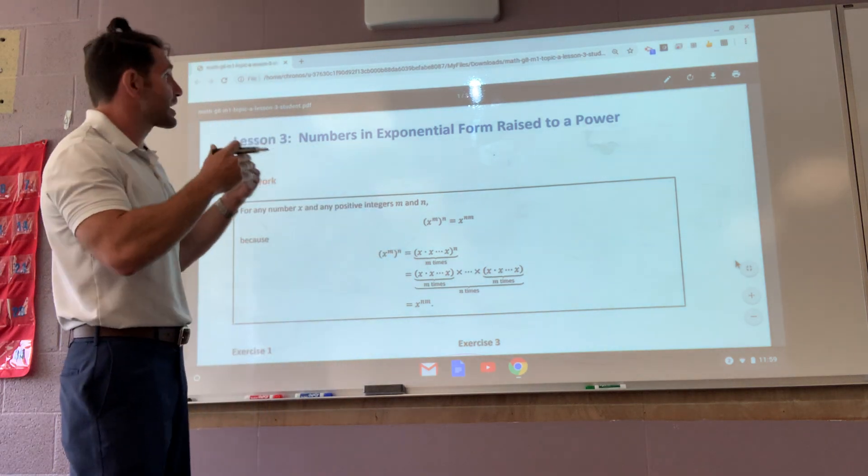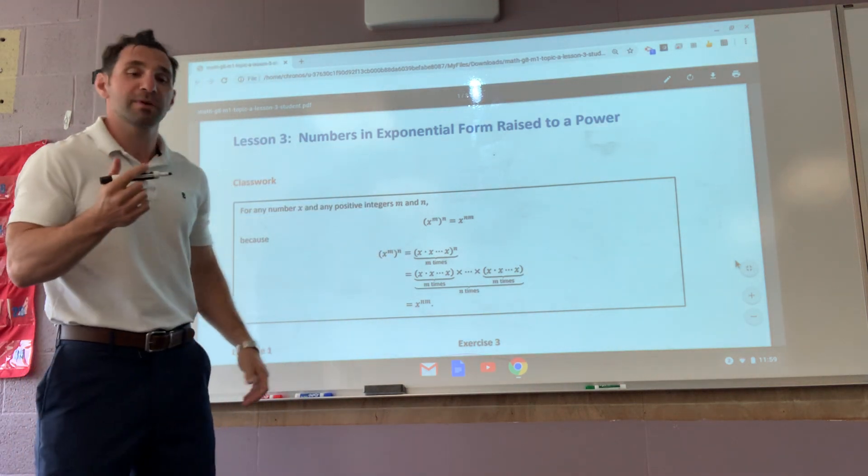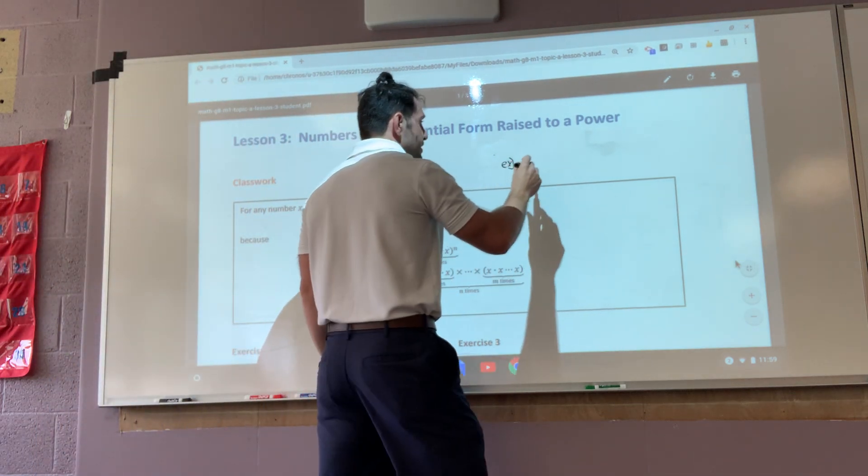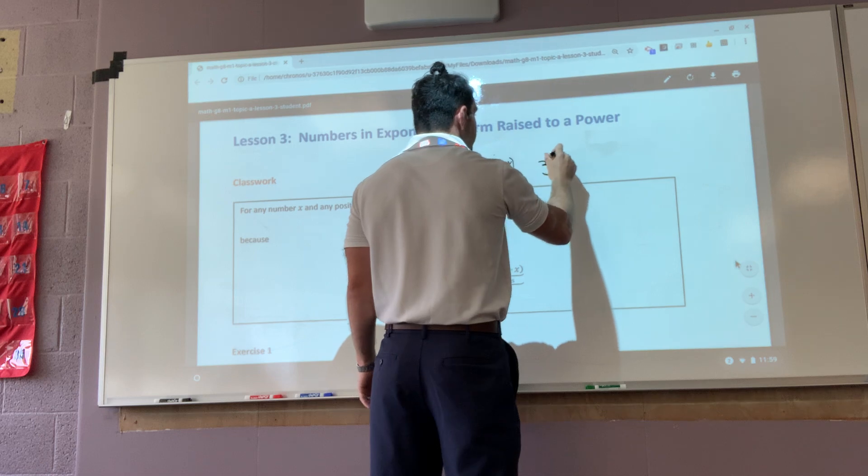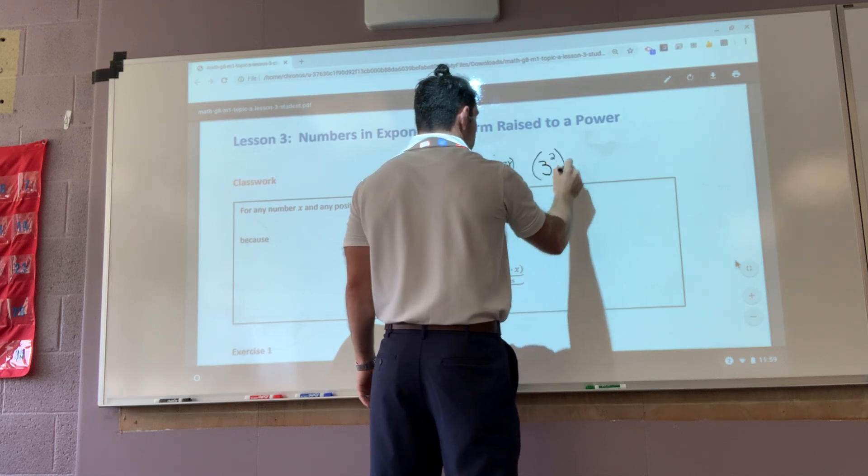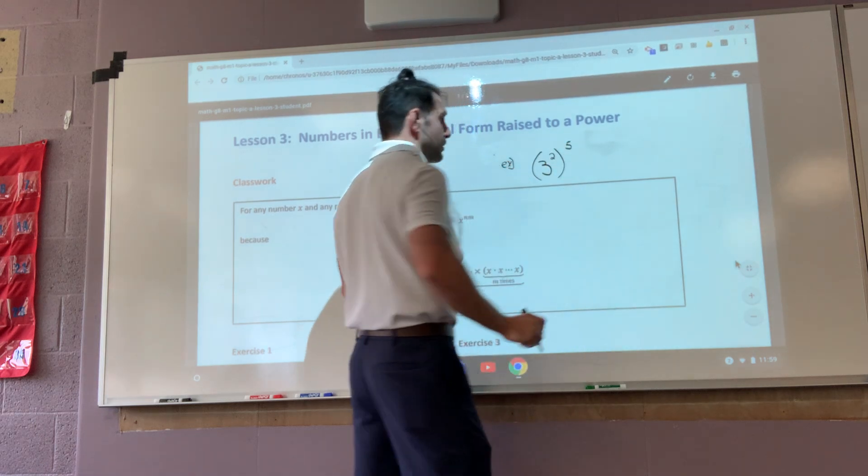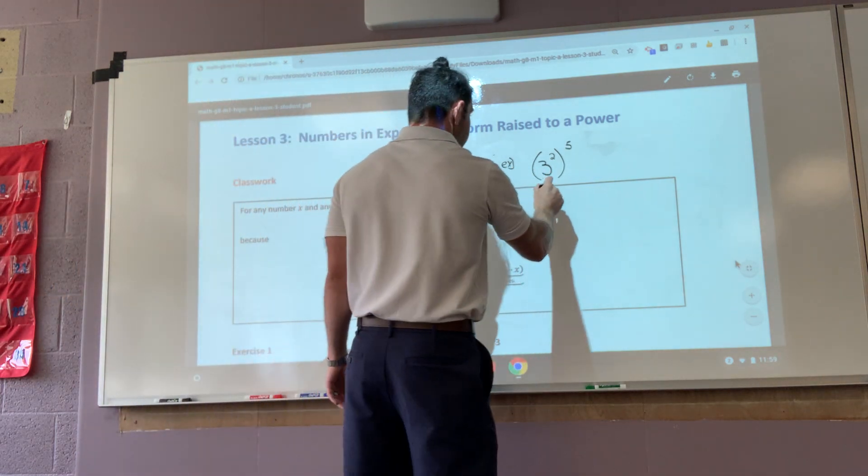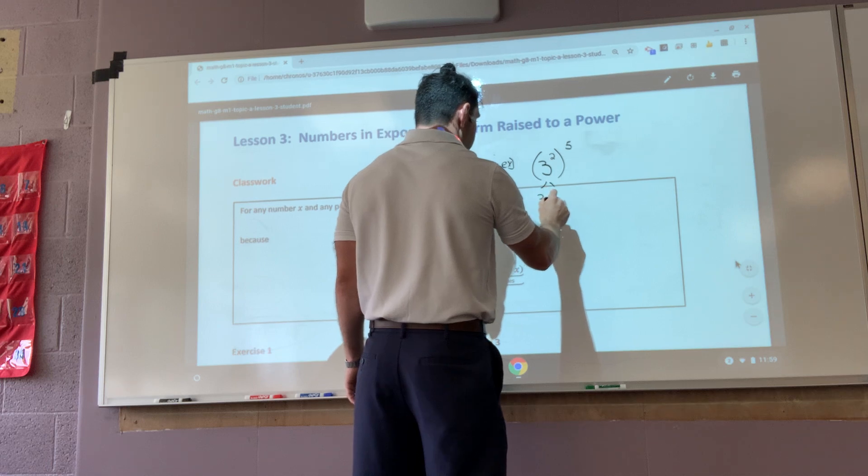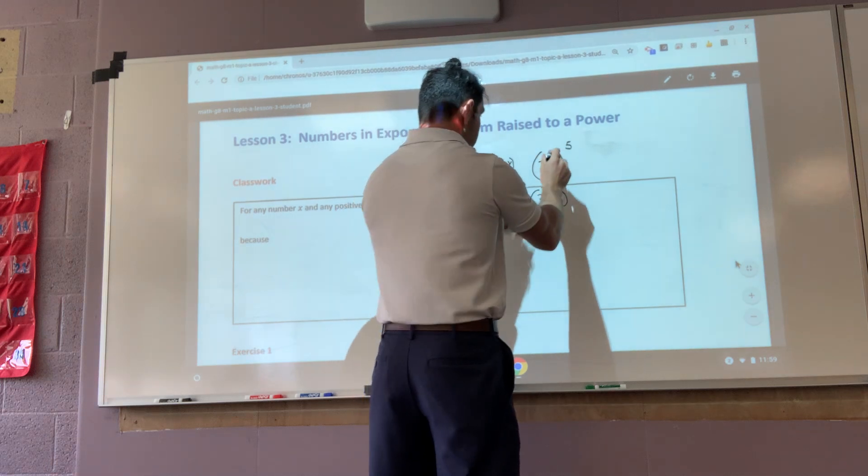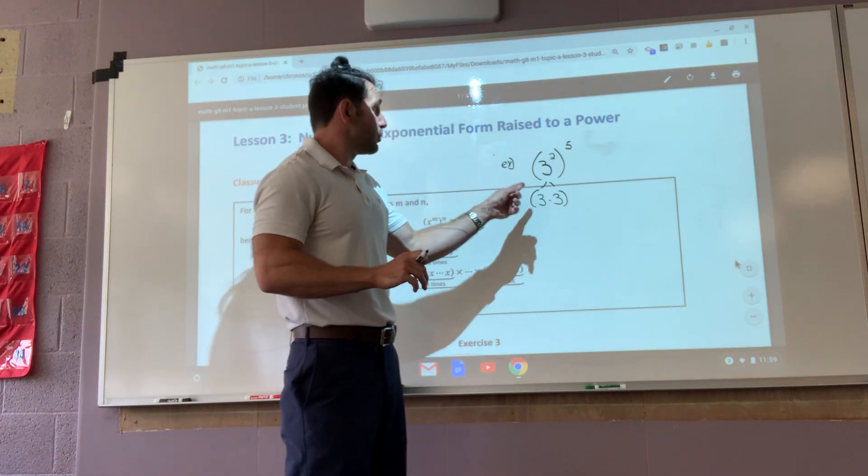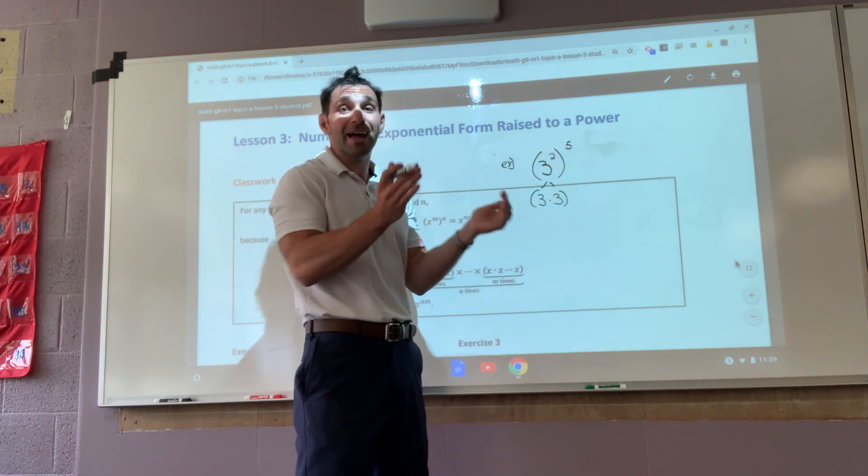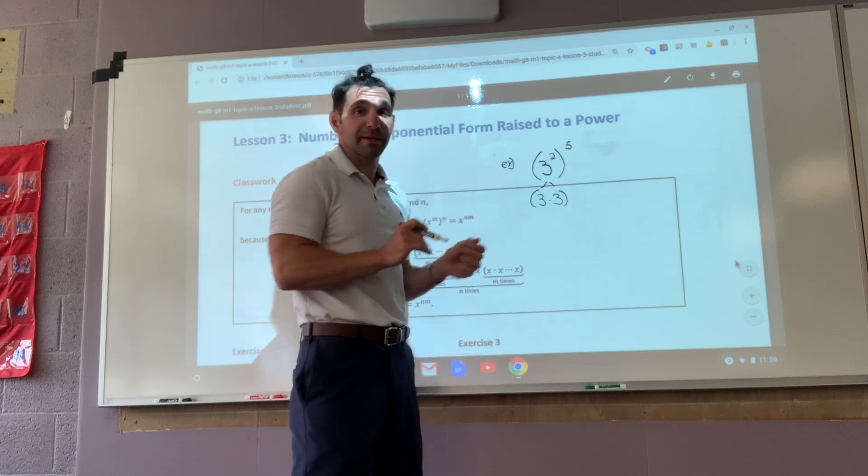This one is an exponent raised to another exponent. Mr. H, what does that mean? Well, that means, here's our example that you might want to have on a separate piece of paper. If we've got three squared raised to the fifth, what does that mean? Well, that truly means that we have three multiplied by three. That's what three squared is. So if three times three is raised to the fifth, how many times do I have that product of three multiplied by three?